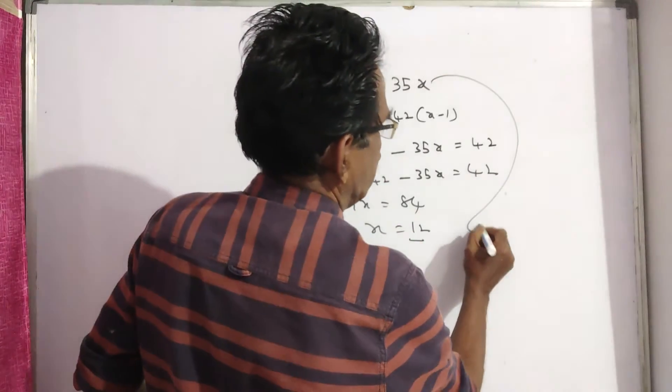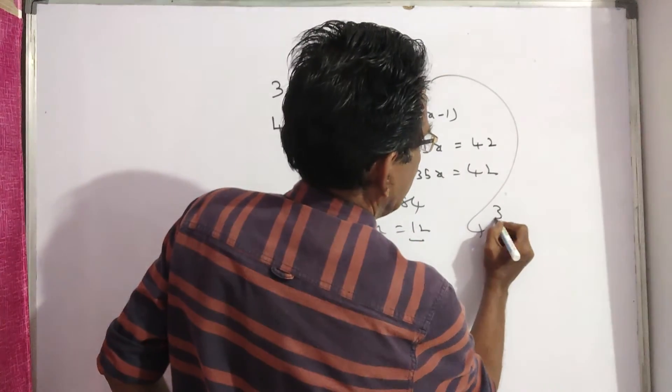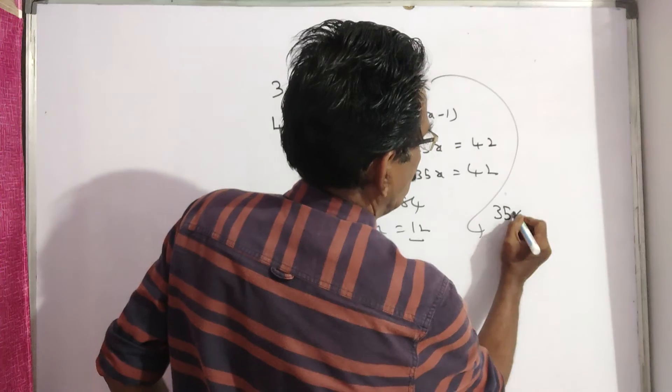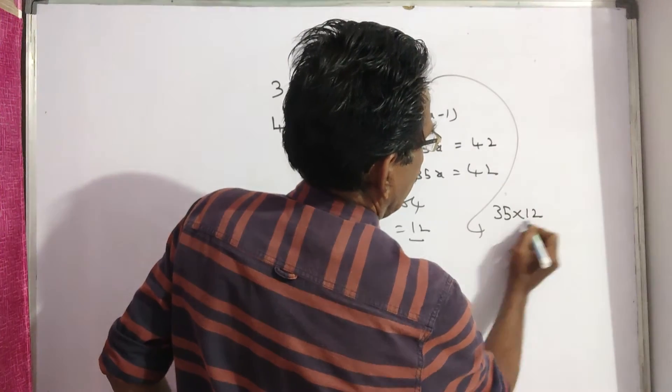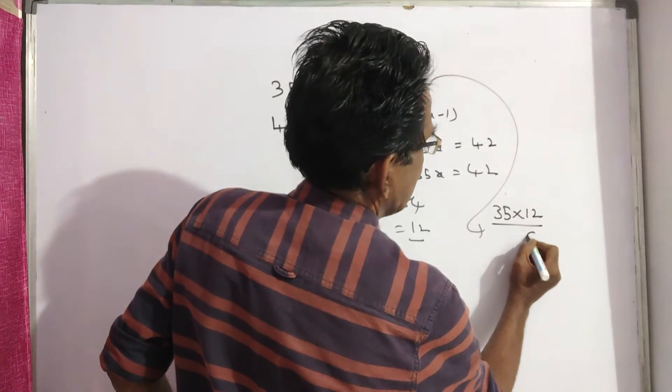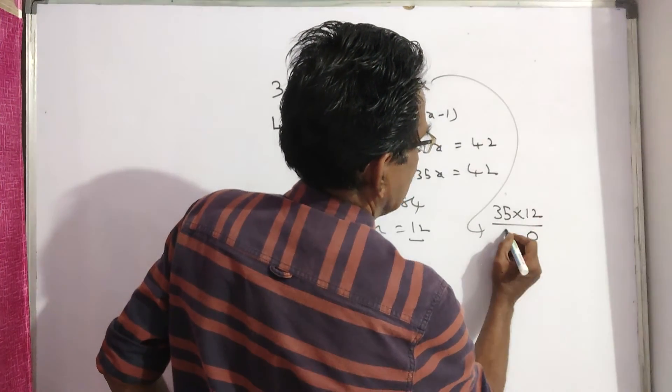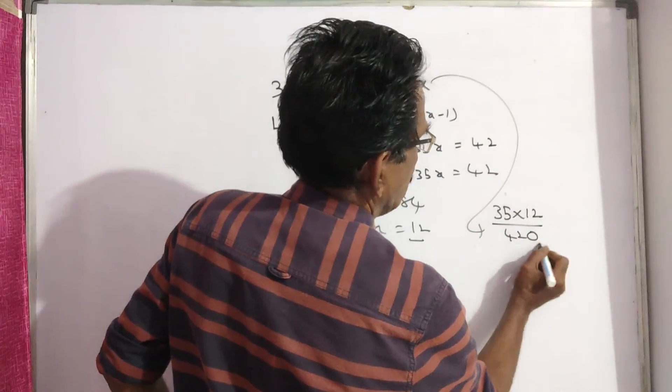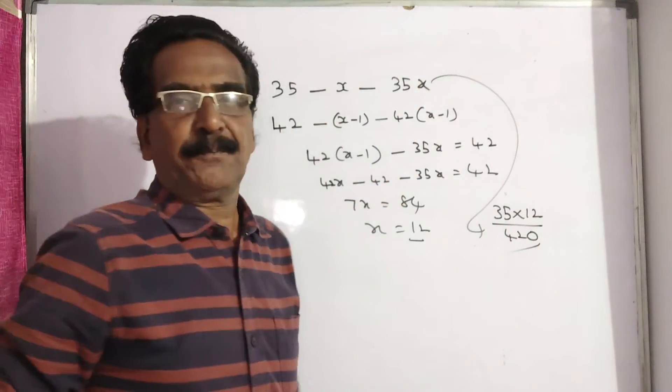So, the total initial expenditure is 35 into 12. That is 420 rupees, friends.